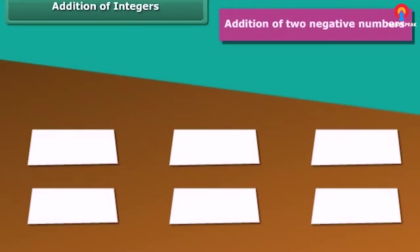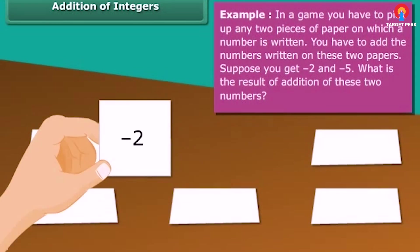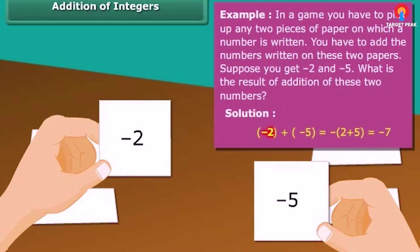Addition of two negative numbers. Example: In a game, you have to pick up any two pieces of paper on which a number is written. You have to add the numbers written on these two papers. Suppose you get minus two and minus five. What is the result of addition of these two numbers? Minus two plus minus five equals minus seven.